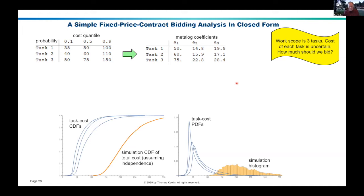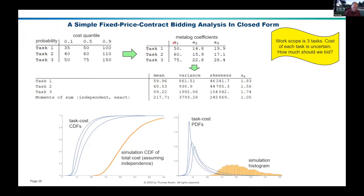How would we do this without simulation in closed form? First, you'd use the equations I just showed you to convert your A1, A2, and A3 into a mean, variance, and skewness, and then calculate a standardized skewness — which needs to be less than 2.07 for the metalog to be feasible. You can see all these metalogs are feasible. You then calculate the moments of the sum as the sum of the moments: this 2217 is the sum of these three means. The variance for independent variables is the sum of the variances, and the skewness is the sum of the skewnesses. This is an exact relation — a fundamental theorem in probability.